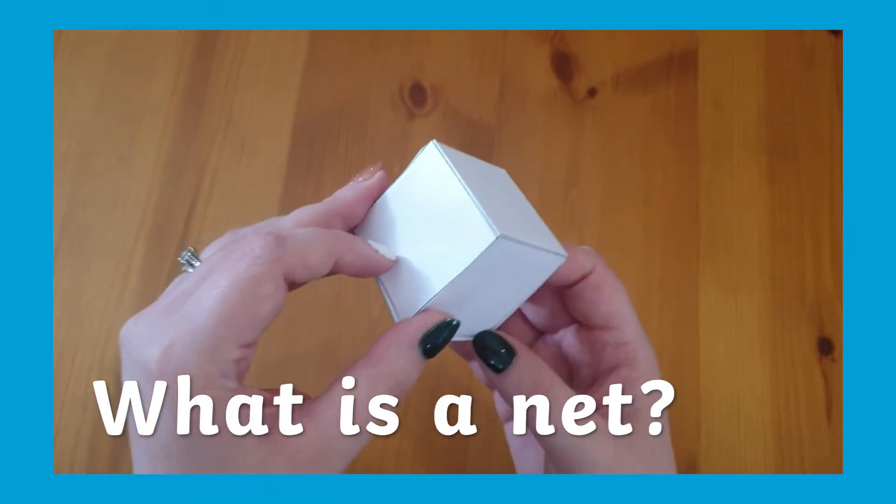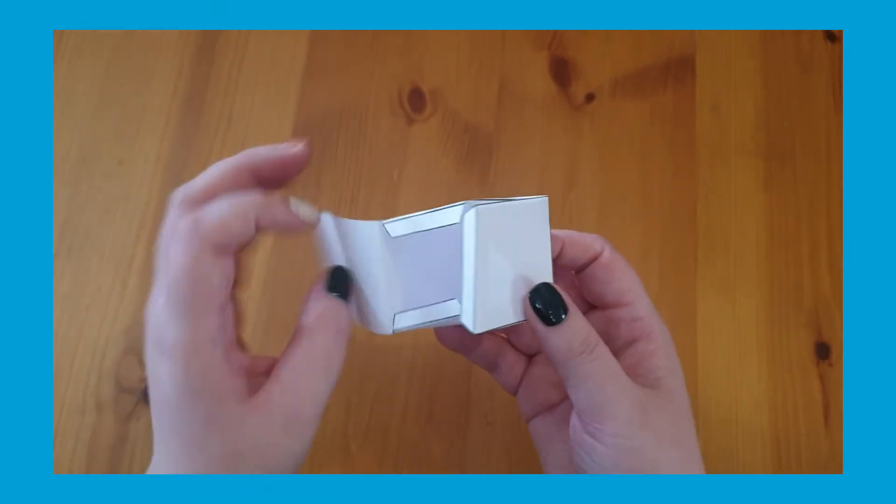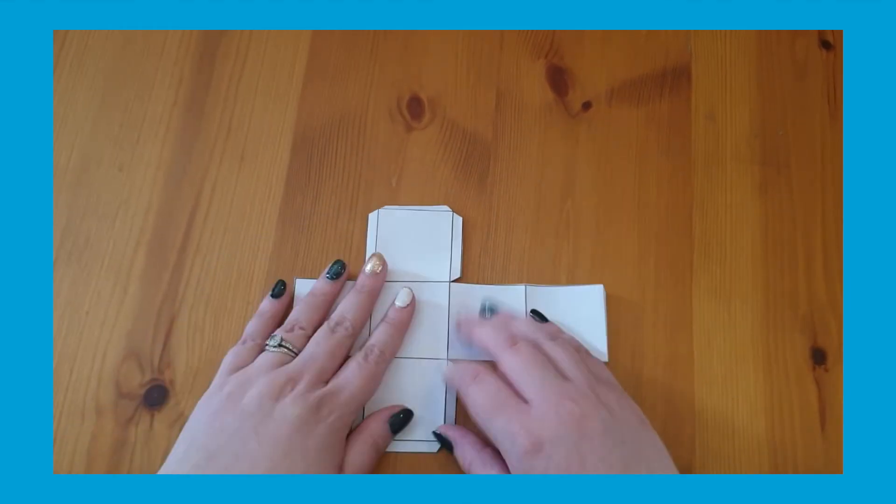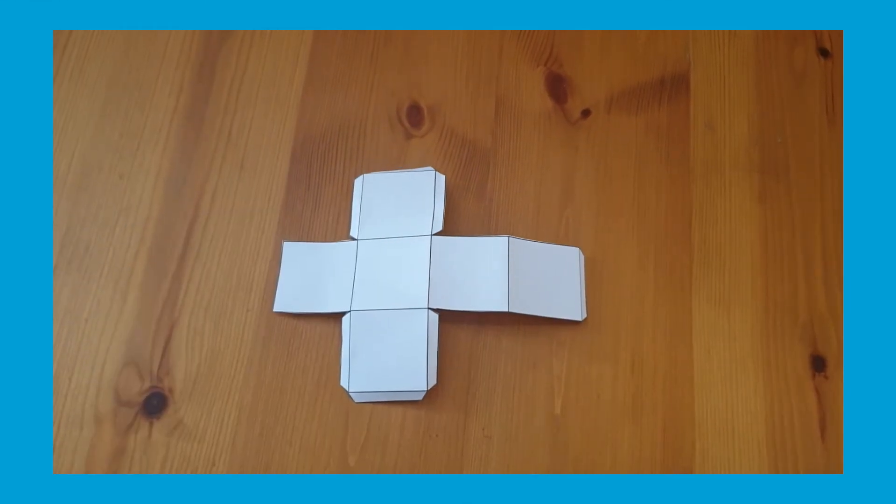Okay, so what is a net? A net of a shape, also called a geometry net, is a term used to describe what a 3D shape would look like if it was opened out and laid flat. A 3D shape can be made by folding up its net.